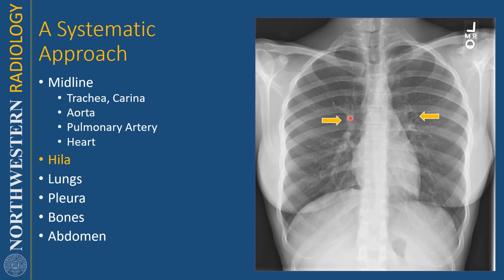I basically judge by eyeballing it, making sure that the hila are the same size and about the same density. If you see one hilum as a little bit more dense than the other, that could mean there are enlarged lymph nodes in that hilum, or that perhaps there's a mass or nodule superimposed over the hilum in the lung. Most of the time when you see an enlarged hilum, it is due to lymph node enlargement. Sometimes when the hila are enlarged, it can be due to pulmonary arterial enlargement.